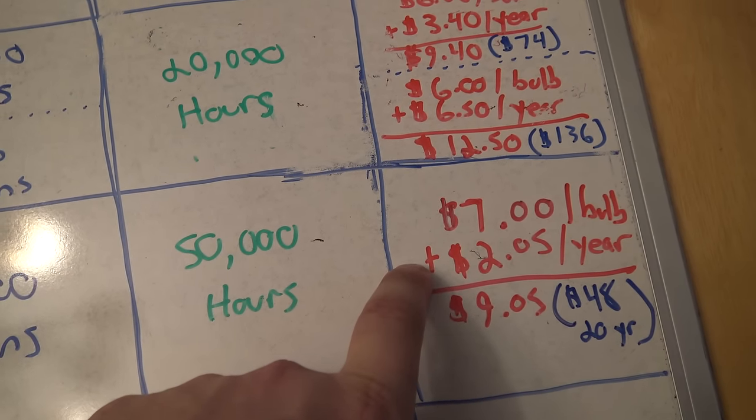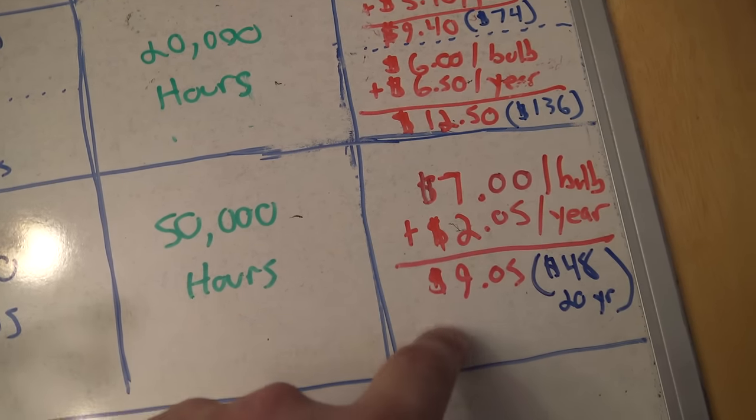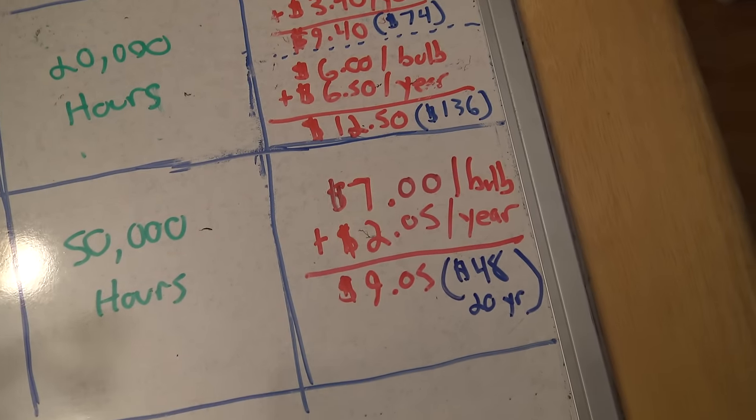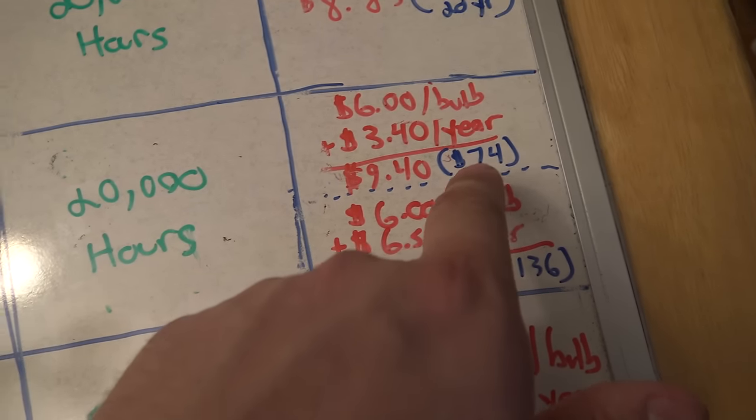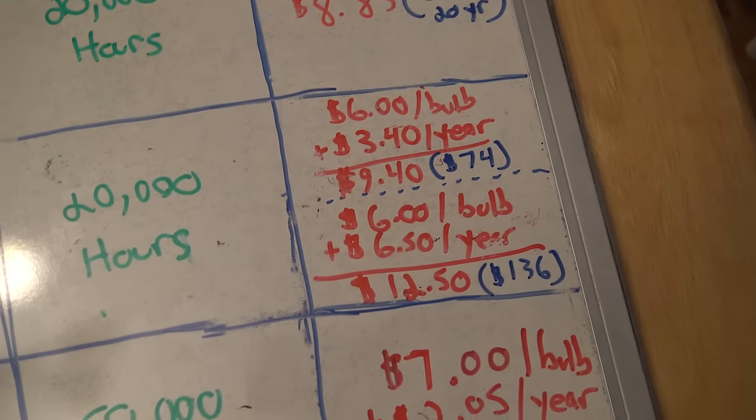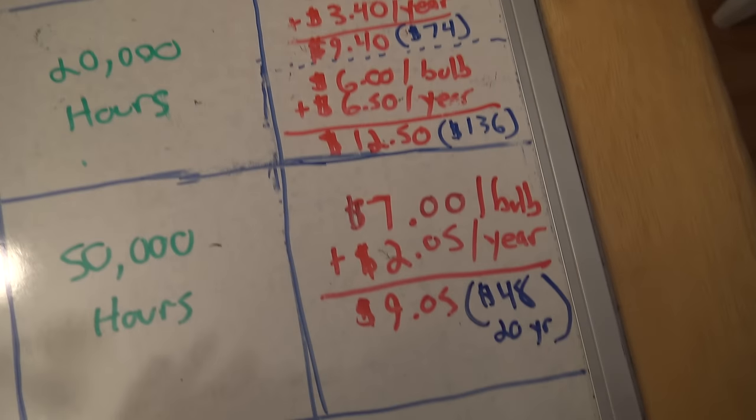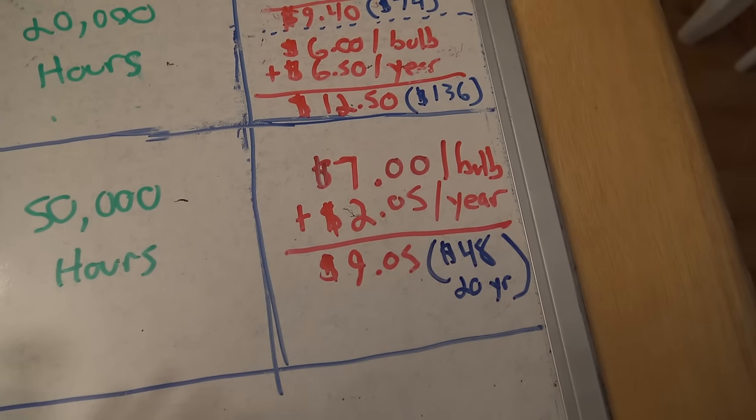The cost is a little bit more per bulb, $7 or $8 per bulb. But here's the real difference. You save a ton of money over the long term, only $2.05 per year to run these. So $9.05 for the first year, and then over 20 years only $48. So you compare that $48 to a regular T5 at $74 or a T8 at $82, and that's where you start to see the real savings in terms of cost.